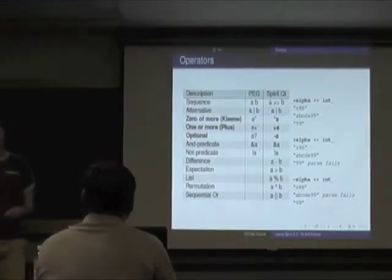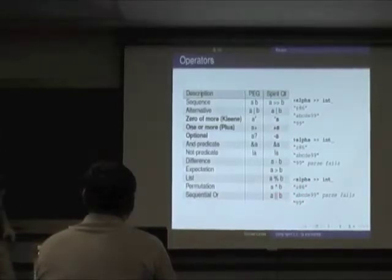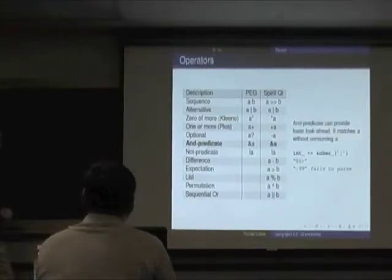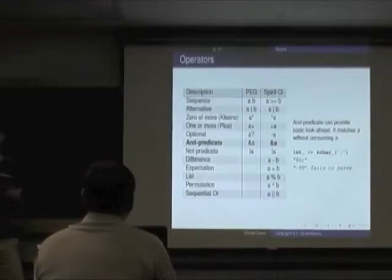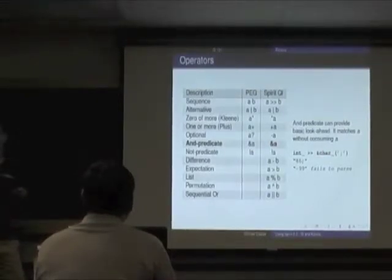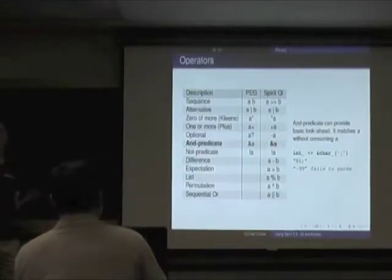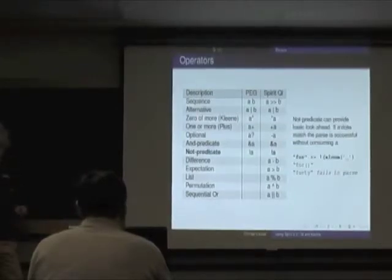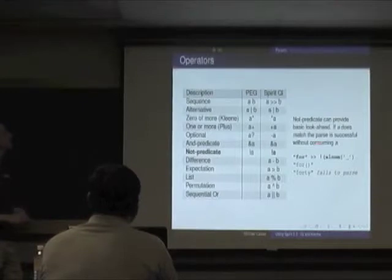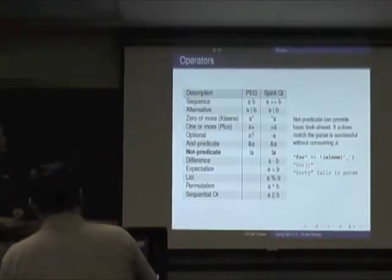Optional means zero or one. Predicates look ahead — if A is successful, it's successful, but we're not consuming it so we can consume it later. The not-predicate is the opposite: if it fails, we're good. Here we parse literal '4' followed by not of either an alphanumeric or an underscore — '4 ' passes fine, but '40' fails.